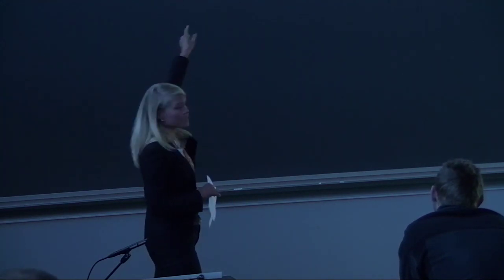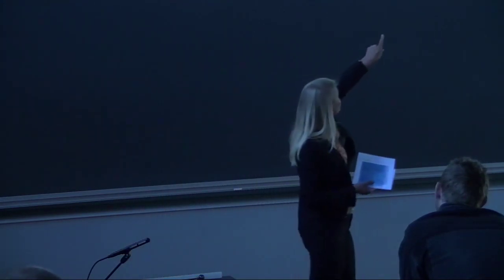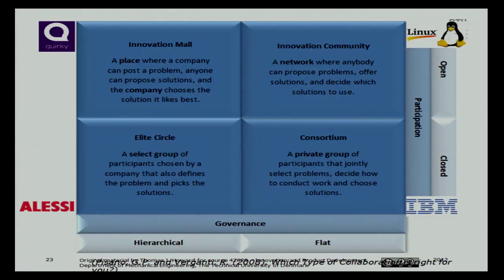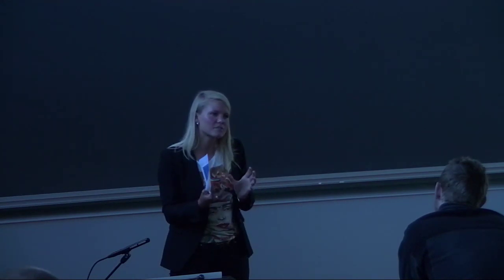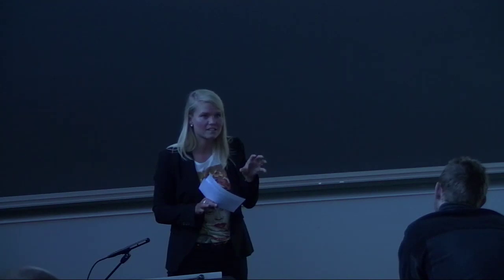At the bottom left circle, we have an example of LSE — an industrial designers company that acquires the 200 most exciting industrial designers in the world, gets them to design a product, and then the company chooses which one to launch. So it's closed and hierarchical. For the private consortium — closed and flat — there's the example of IPM, where bigger companies cooperated on a microprocessor and agreed to share what they invented together but only within that consortium. So it's a closed design but still sharing within the group.